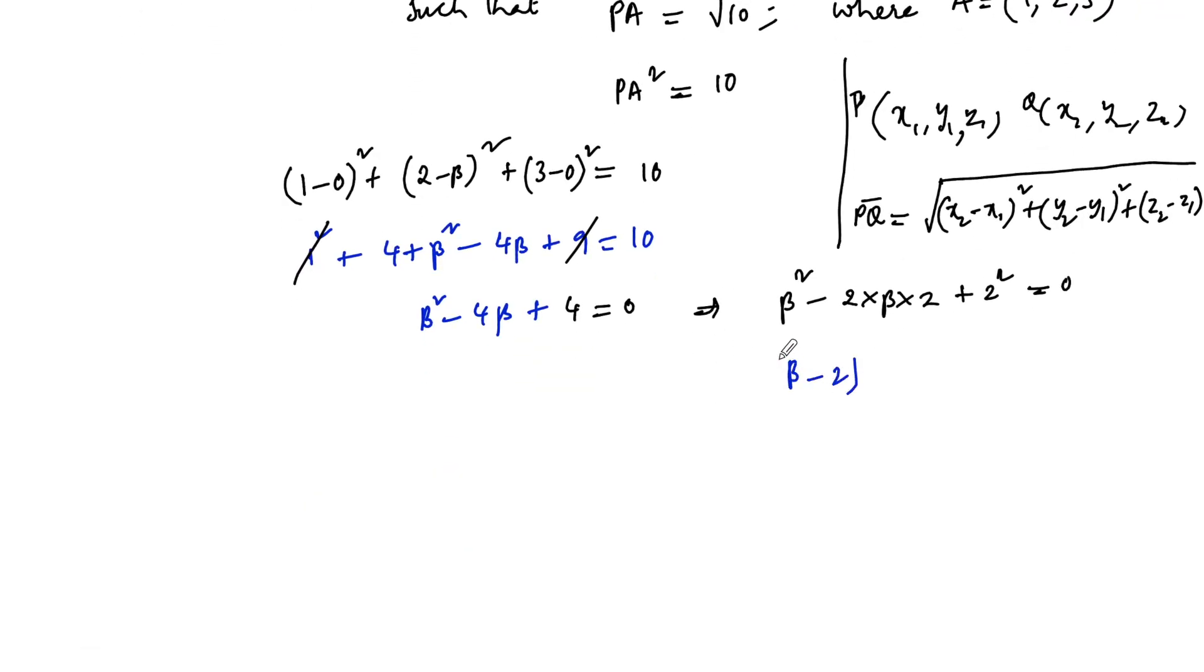That is (beta minus 2) whole square is equal to 0. So, getting 2 equal roots. So, beta is equal to 2 we are getting.